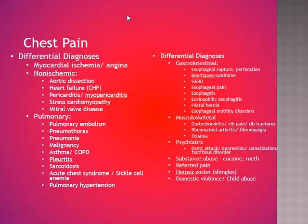The differential diagnosis for chest pain is extensive. Cardiac: myocardial ischemia, aortic dissection, heart failure, pericarditis, cardiomyopathy, mitral valve disease. Pulmonary: pulmonary embolism, pneumothorax, pneumonia, malignancy, asthma, COPD, pleuritis, sarcoidosis, acute chest syndrome in sickle cell anemia, pulmonary hypertension. Gastrointestinal: esophageal rupture, perforation, Boerhaave syndrome, GERD, esophagitis, eosinophilic esophagitis, hiatal hernia, esophageal motility disorders. Musculoskeletal: costochondritis, rib pain, rib fractures, rheumatoid arthritis, fibromyalgia, trauma. Psychiatric: panic disorder, depression, somatization, factitious disorders, substance abuse (cocaine and methamphetamine). Referred pain: shingles, domestic violence — be very careful about domestic violence.